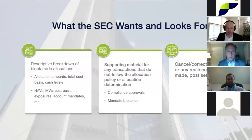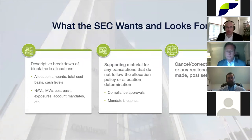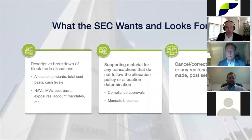From a technologist's perspective, when you have to produce these items for the SEC, for firms with a simple tech footprint, this should be as simple as opening your OMS or accounting system, pulling up a list of trades and allocations, and sending it out. If the asset types being traded are straightforward, this can be fairly easy to produce, although it does tend to require some data massaging because nothing is ever that simple.